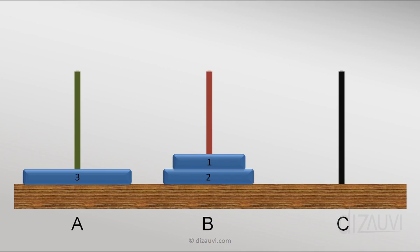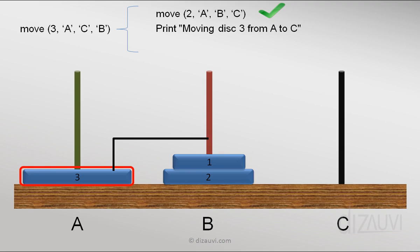So essentially the state of the system right now is exactly as if we moved the two disks from tower A to B using tower C, right? Which was done recursively. And we don't really care about the details. So we are done with this part. Now we move disk 3 from A to C.